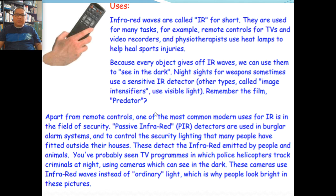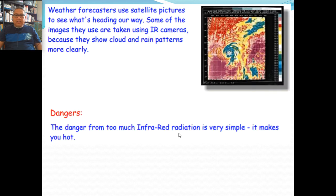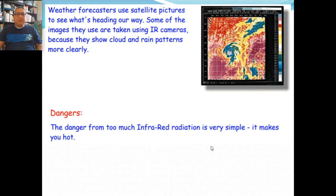Infrared can also be used for weather forecasting because it shows cloud and rain patterns more clearly. The danger of too much infrared radiation is simple — it makes you hot. It's not going to kill you or change your DNA, but it makes you hot.